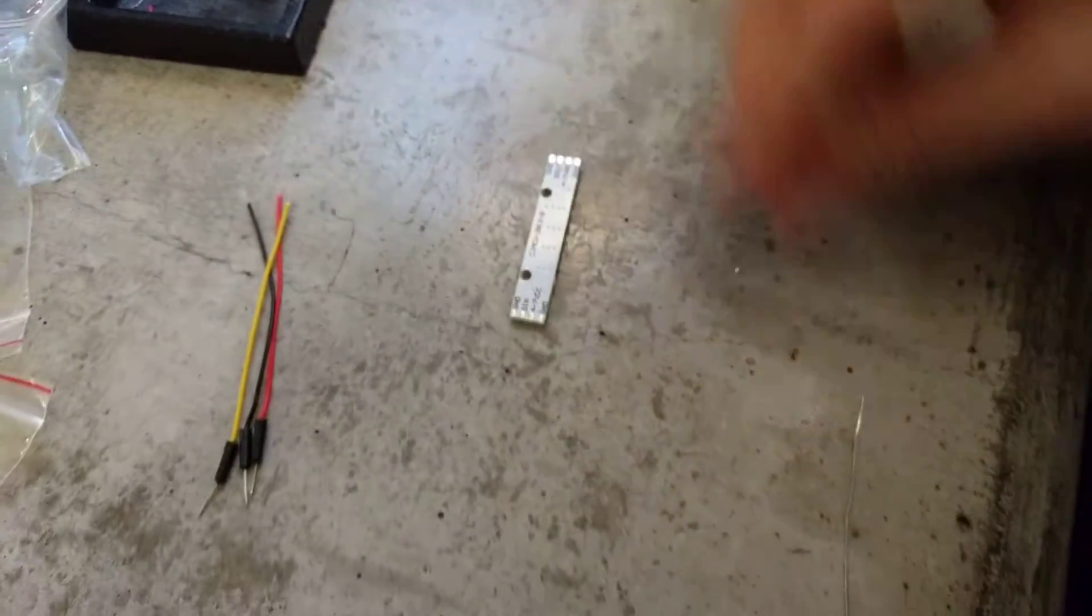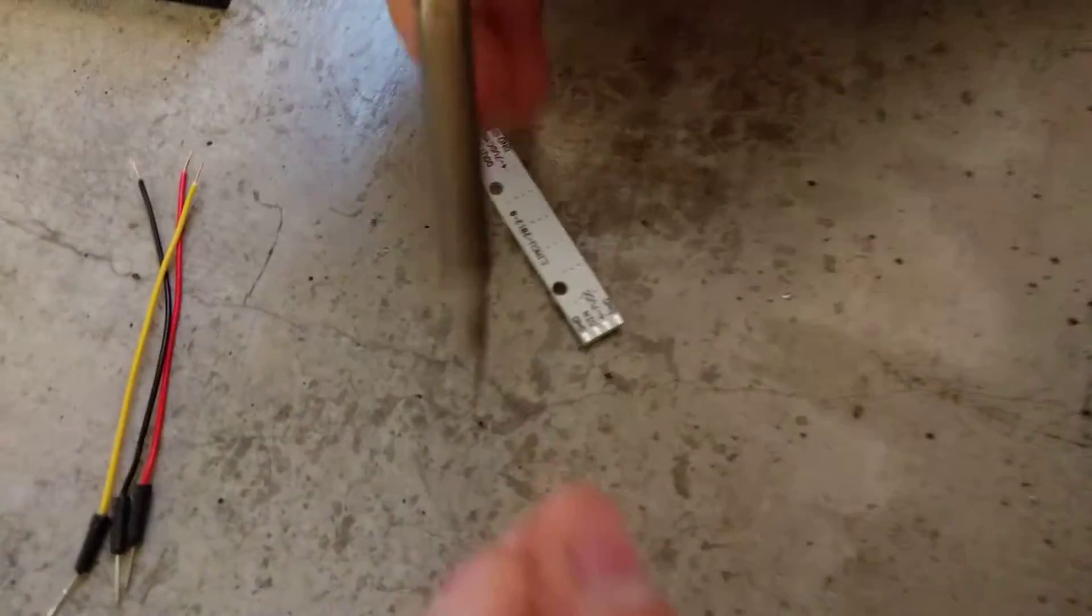So there are wires, here's our NeoPixel strip. So next what we'll do is we're going to just put some globs of solder on the end here.